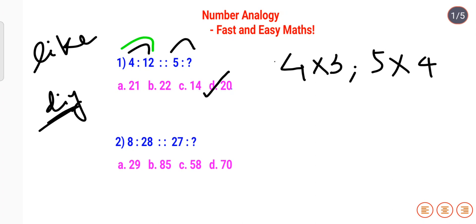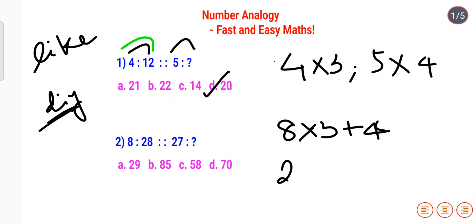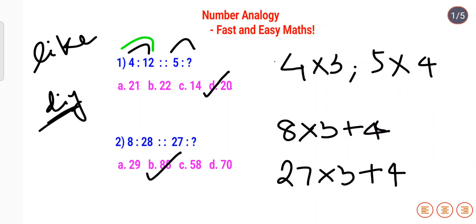The next one is: 8 is to 28. I can say that 8 × 3 + 4 gets me 28. Applying the same logic to 27: 27 × 3 + 4 — now 27 × 3 is 81, and 81 + 4 gives you 85. So option B is your answer for this question.